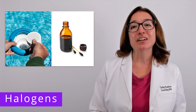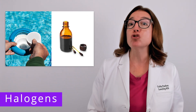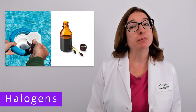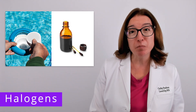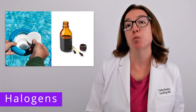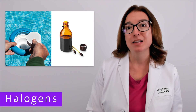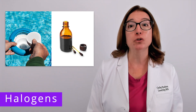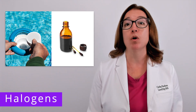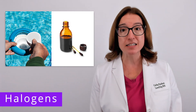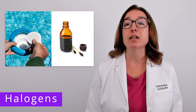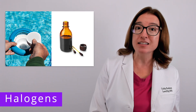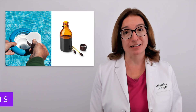Halogens are chemical compounds that act as strong oxidizing agents, causing damage to cellular components and disrupting cellular processes. Some common examples of halogens include chlorine, which is used as a water disinfectant, as well as iodine, which is used as a disinfectant as well as an antiseptic.